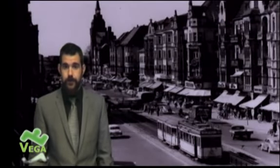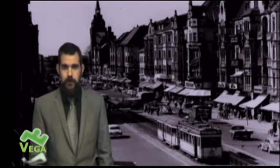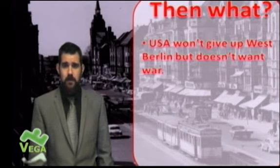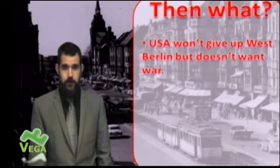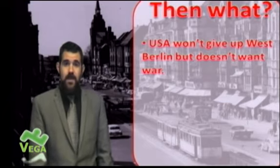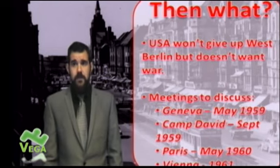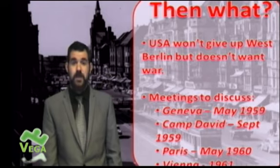So what happens next? West Berlin is a prosperous city — trams, shops, a capital paradise. Bad news for Khrushchev. The Americans are not going to give up West Berlin — no chance. But similarly, they're not prepared to go to war over it. This means they start to talk to each other, starting with Geneva in 1959, though not a great deal comes from that.